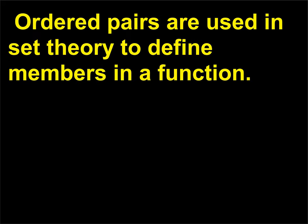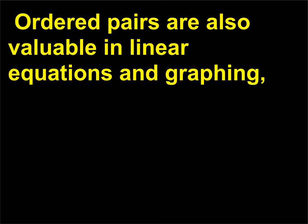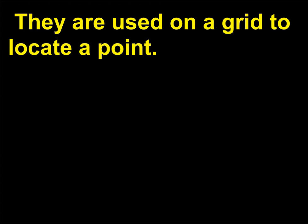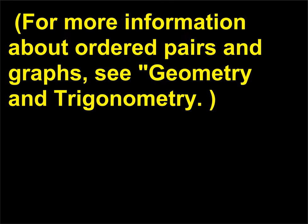Ordered pairs are used in set theory to define members in a function. They are also valuable in linear equations and graphing, in which the X coordinate is the first number and the Y coordinate is the second number, or (X, Y). They are used on a grid to locate a point. For more information about ordered pairs and graphs, see Geometry and Trigonometry.